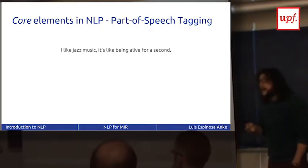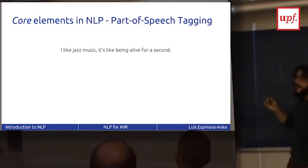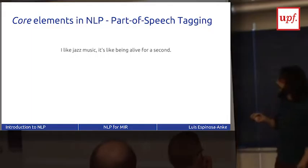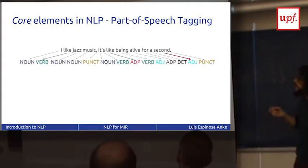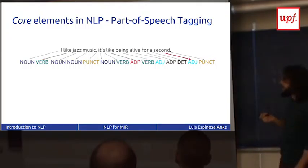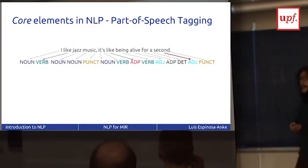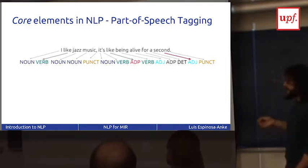The first core task is part-of-speech tagging. This is a custom list of very important NLP tasks — not a universal truth, but most researchers would agree. In part-of-speech tagging, you resolve grammatical category ambiguity for each word in the text, which you can then apply to downstream applications like parsing — knowing who is the subject, who is performing an action, and who is receiving it. For example, in the sentence 'I like music, it's like being alive,' the word 'like' appears twice: once as a verb, once as a preposition.